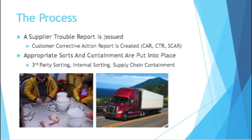Immediately after logging the issue, you need to contain it — put immediate containment into place. Containment is also known as a knee-jerk or firefighting reaction: oh no, we have bad parts, let's make sure no more get to the customer. This containment takes the form of third-party sorting. There are whole companies whose sole job is to come into your facility and sort through parts. You give them work instructions and visual clues to look for, and they decide which parts are good and which are bad. You can also do this internally, which is a lot cheaper.